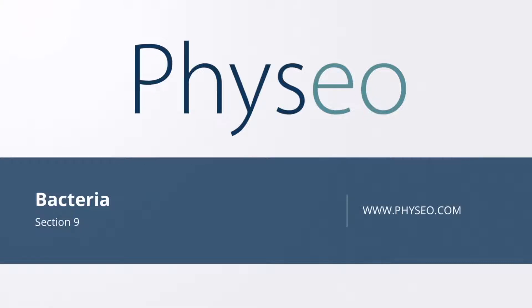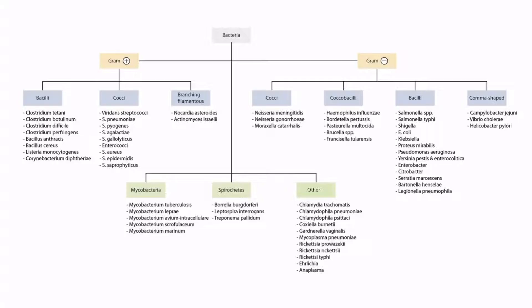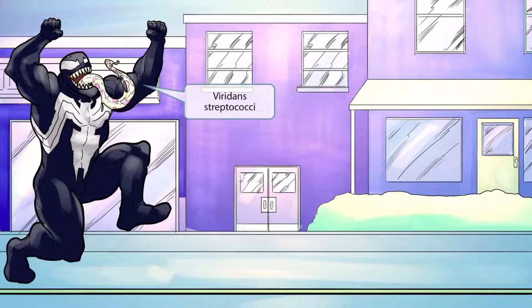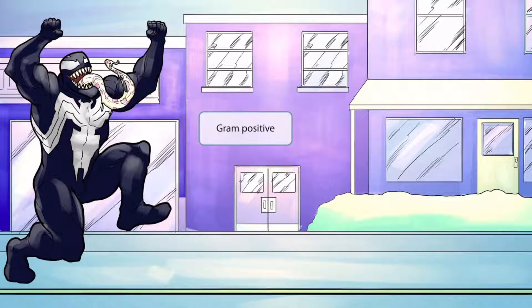Welcome to section 9 of Bacteria. This is our bacteria overview figure. In this video, we'll be discussing Viridans streptococci, which you can see right here. This scene will be an epic comic book style fight between our venomous villain and a spider warrior. The venomous villain represents Viridans streptococci, so venomous for Viridans.